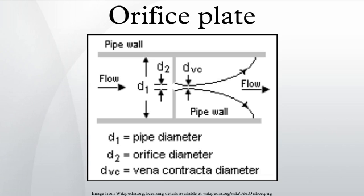An orifice plate is a thin plate with a hole in the middle. It is usually placed in a pipe in which fluid flows. When the fluid reaches the orifice plate, the fluid is forced to converge to go through the small hole. The point of maximum convergence actually occurs shortly downstream of the physical orifice, at the so-called vena contracta point.